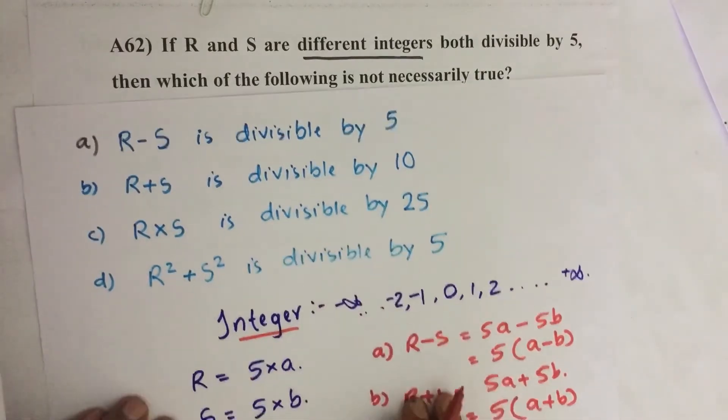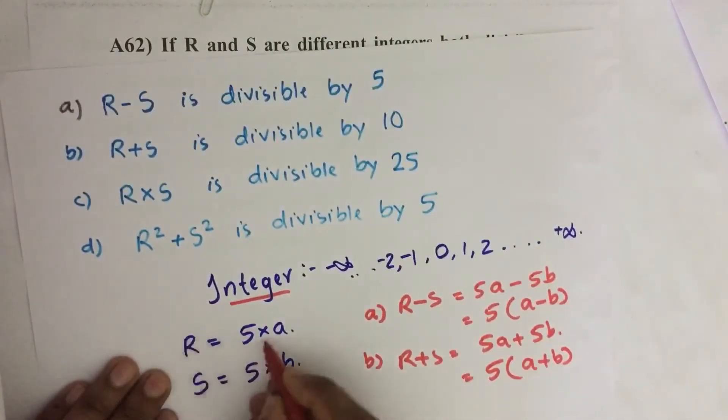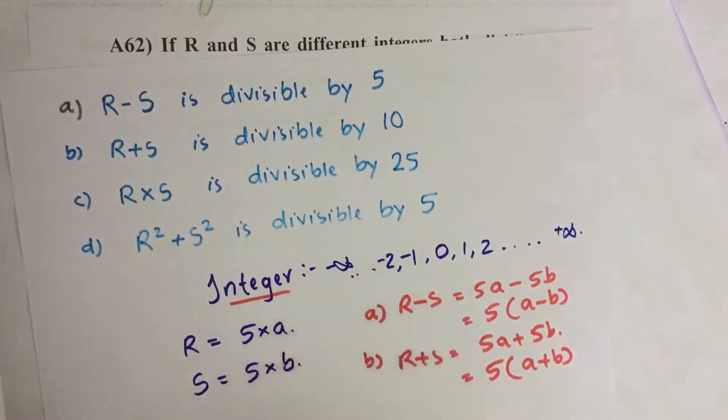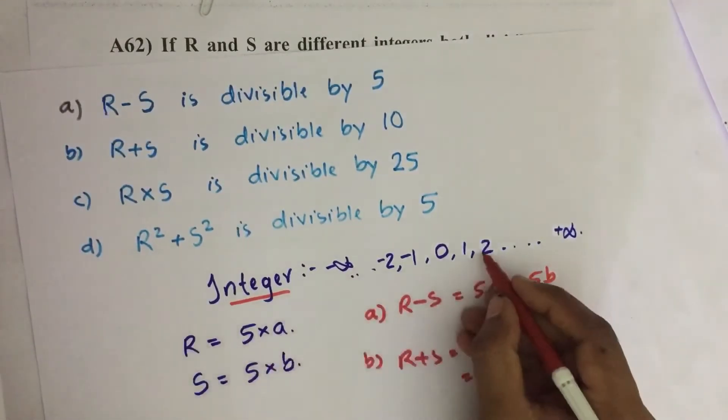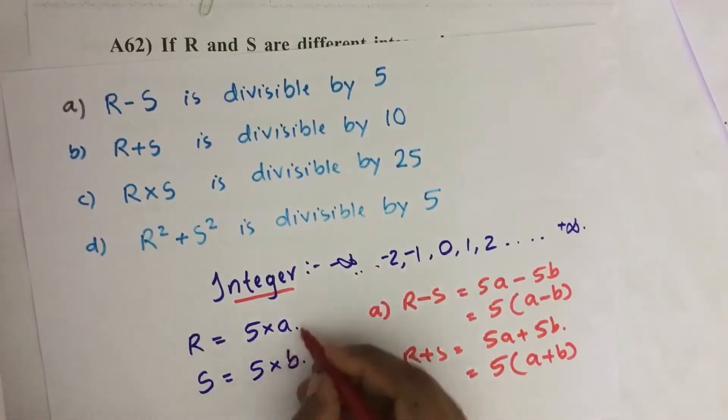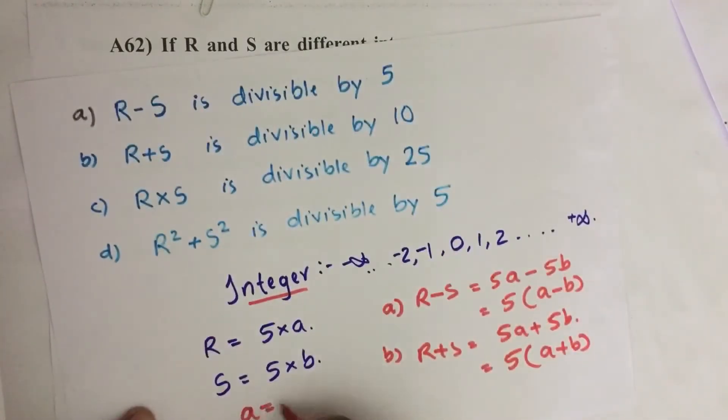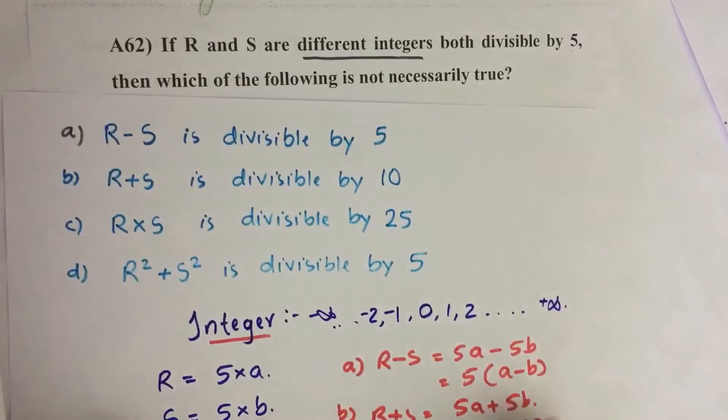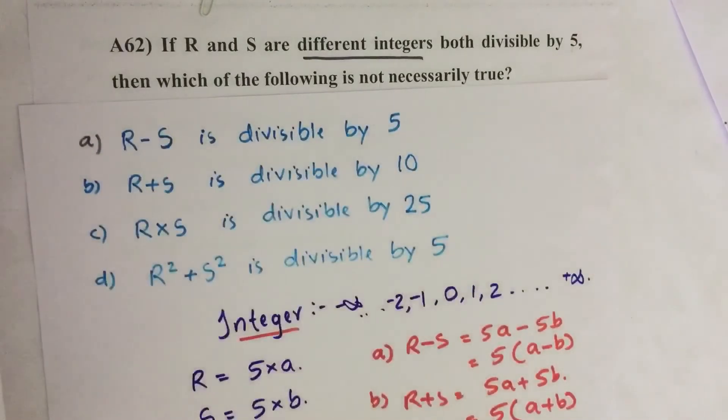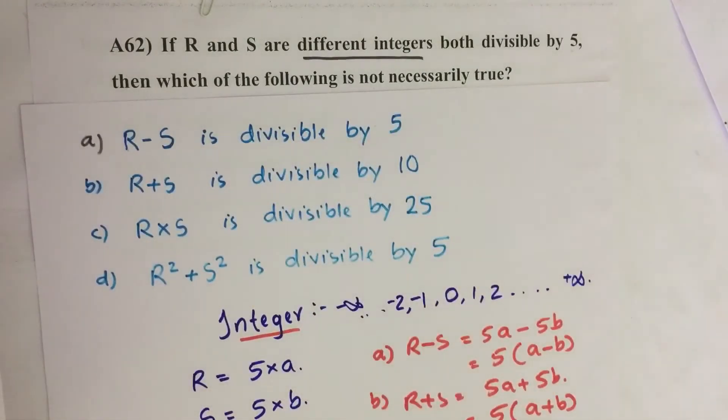Now I am considering, since both are divisible by 5, R as 5 into A where A is an integer. Suppose A equals 2, then 5 into 2 equals 10. Any integer you can give for R. Similarly, S is also an integer, then 5 into B, where B is also an integer and A not equal to B. Here it is given that R and S are different integers, so we can say A not equal to B. Now we are checking each statement given as options, and which one is not following all the time, that is what we have to find.